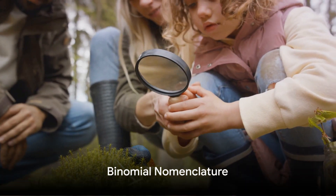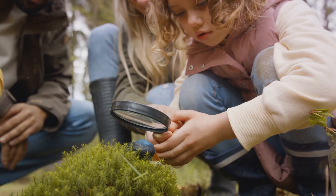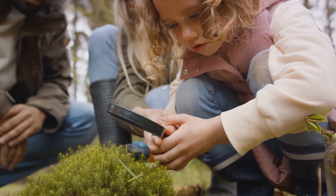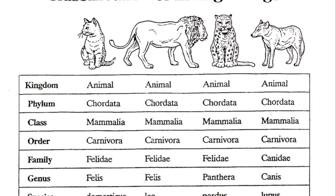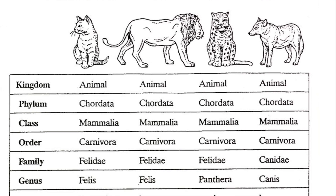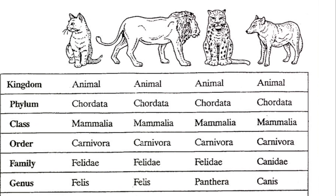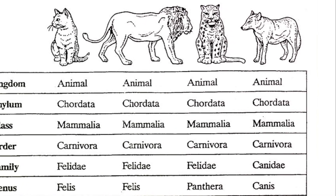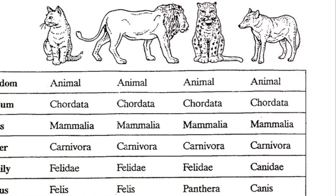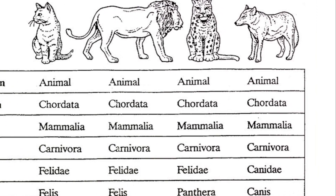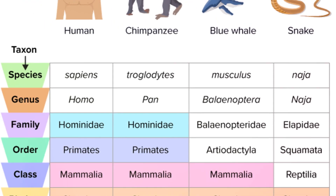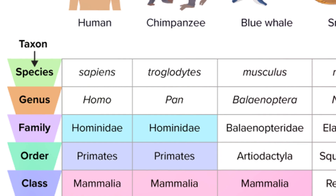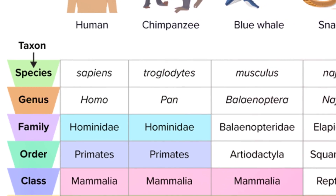Every organism on earth has a Latin name consisting of its genus and species. This system, known as binomial nomenclature, brings uniformity and avoids confusion. So the scientific name of an organism has two parts: the first part is the generic or genus name, and the second part is the specific or species name. The genus name starts with a capital letter, while the species name starts with a small letter. For example, man belongs to the genus Homo and species sapiens, so his scientific name is Homo sapiens.